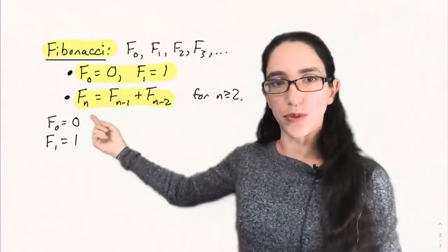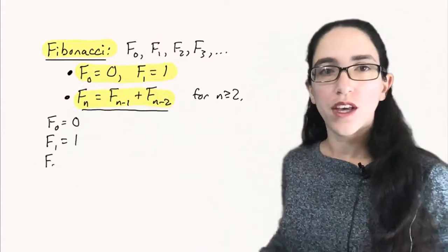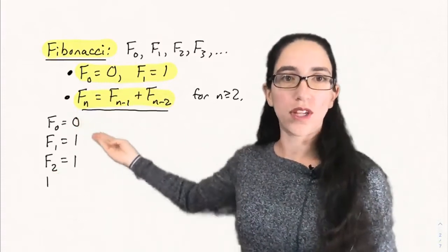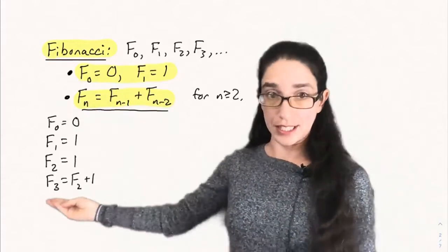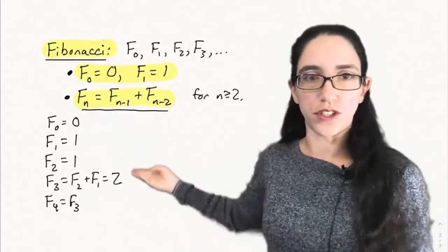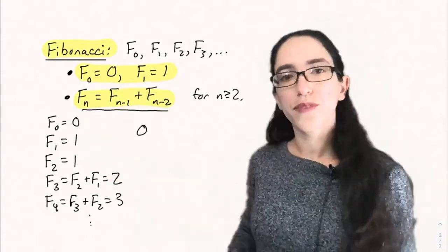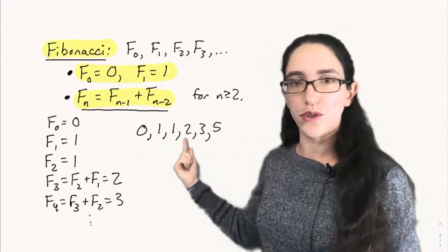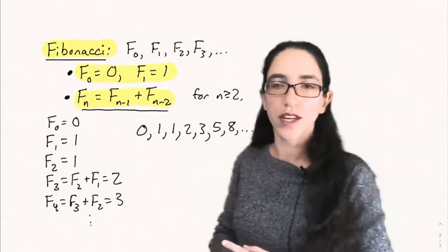So if we try to write down the sequence, we start with 0 and 1. To get to the next step, because this is a depth-2 recursion, to get F₂ we need both F₀ and F₁ — we take F₀ plus F₁ to get F₂. Each number is the sum of the previous two terms. F₃ is F₂ plus F₁, so we get 1 plus 1, which is 2. Then F₄ is 2 plus 1, which is 3. And so on: 0, 1, 1, 2, 3, 5, 8 — you always add the last two numbers to get the next term.